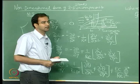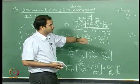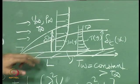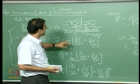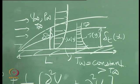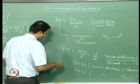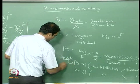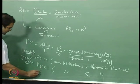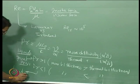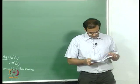When the Prandtl number is very small, the momentum boundary layer is much thinner than the thermal boundary layer, requiring certain approximations. For gases, the Prandtl number is approximately 1. For liquids, it is much greater than 1. For liquid metals, the Prandtl number is much less than 1.